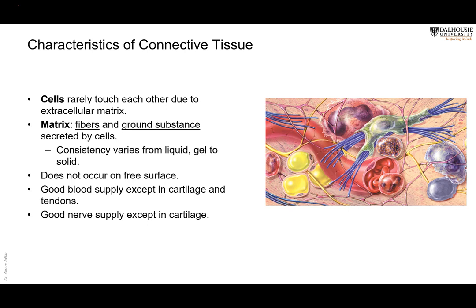Connective tissue does not occur on free surfaces — those surfaces that cover the body or line it from the inside. All free surfaces are epithelial tissue. Connective tissue has a very good blood supply, contrary to epithelial tissue. It is the blood supply of connective tissue that provides nutrients for the overlying epithelial tissue.